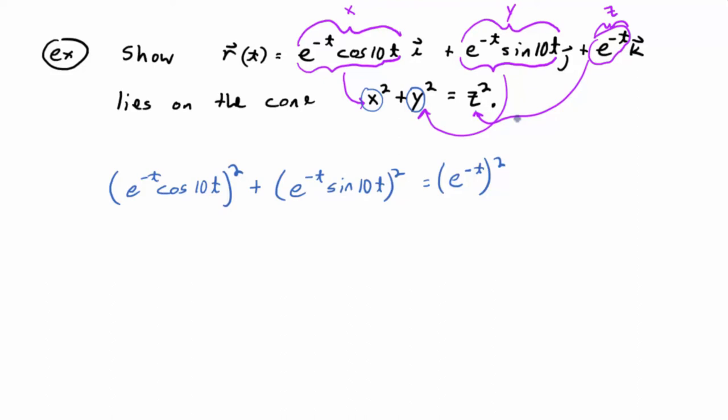Okay, which is e to the negative 2t, if you multiply exponents. So let's work on that left side. The exponent applies to both factors. So this would be e to the negative t squared times cosine squared, for this first guy of 10t. And then what would the second guy be? Yep.